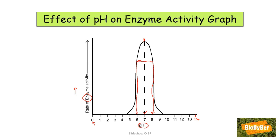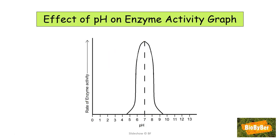If this were a graph for pepsin, the stomach enzyme, the graph shape would look the same but the rate of enzyme activity would be highest at a pH of 2. We can sketch that in, showing enzyme activity working best at a pH of 2.